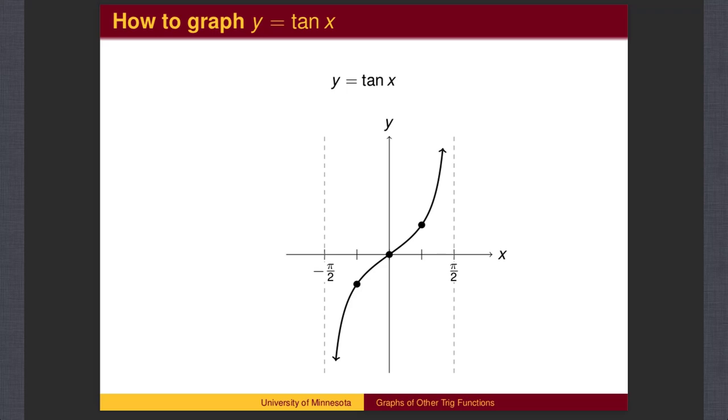The same thing happens at negative pi over 2, except when we take angles slightly to the right of negative pi over 2, we are dealing with angles in the fourth quadrant, so the sine is negative, while the cosine is positive. When we divide, the answer is large and negative, so we are going down to negative infinity.